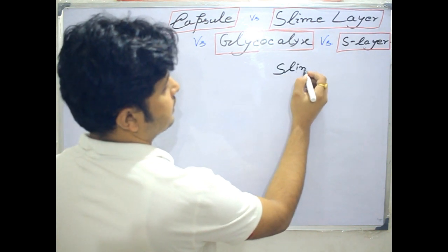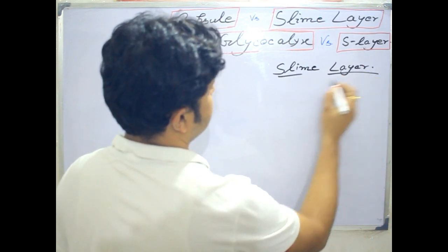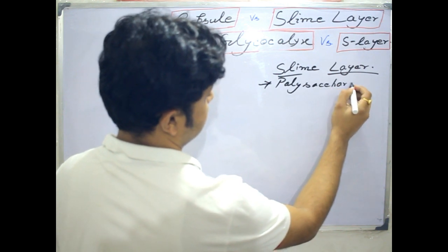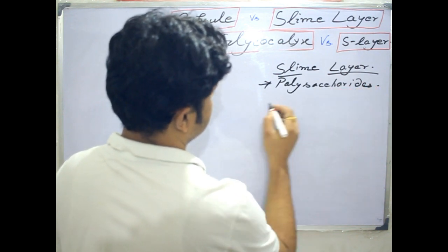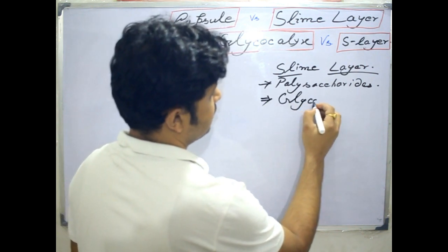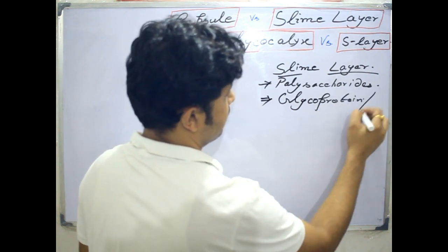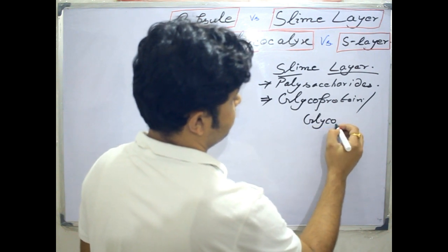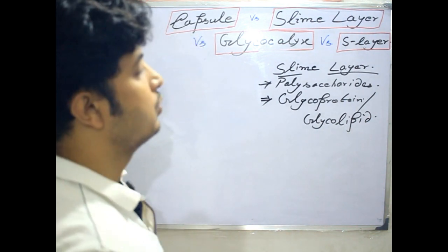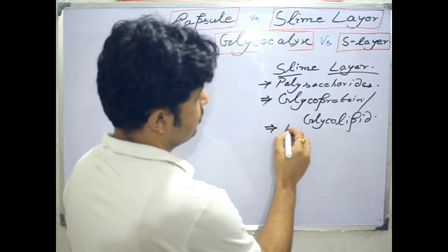In case of slime layer, as I have already said, it is made up of polysaccharides. It may also be a glycoprotein or glycolipid in the composition of the glycocalyx which is present there. It is also called the slime layer if it is loosely attached.